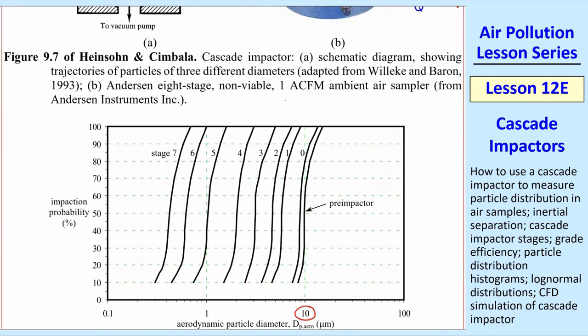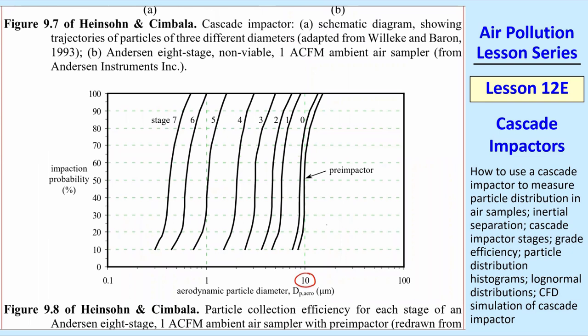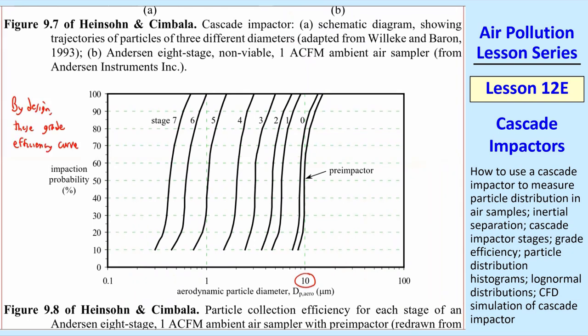It's measuring all the particles that have been collected in the air that are under 10 microns. By design, the way these things are made, these grade efficiency curves are steep. You can see that they're almost vertical here. So pick any one tray. It has a very small range. They say this tray 3 here, bin 3, has a small range of particles, some bin size, where it collects those particles.